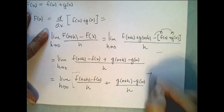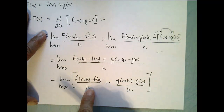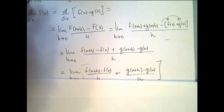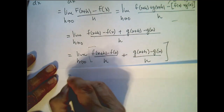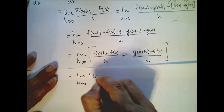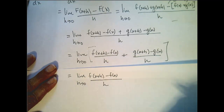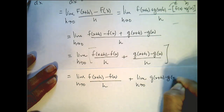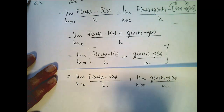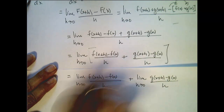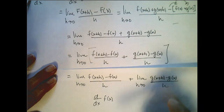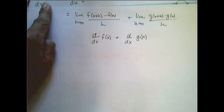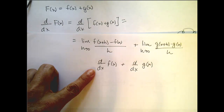Now if I remember my rules for limits, the limit of a sum — if those limits exist, and I know these limits exist because from the beginning I stated that f and g were differentiable — then I can split this limit up. So this is equal to the limit as h goes to 0 of f of x plus h minus f of x all over h, plus the limit as h goes to 0 of g of x plus h minus g of x over h. If you recognize these expressions, the first is the derivative of f and the second is the derivative of g. And so what we wanted to show was that the derivative of the sum of two functions equals the sum of the derivatives.